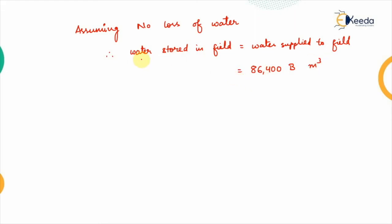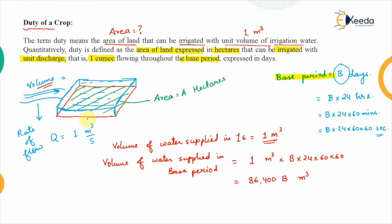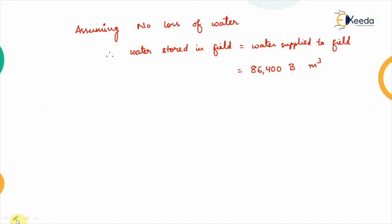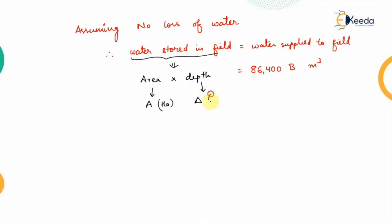The water which can be stored in the field equals the volume of this shape. This shape is typically a cuboid having area A hectares, and the depth of the water in the field is known as the delta of the crop, represented by Δ in meters. So the volume stored in the field equals area × depth — that is A hectares × Δ meters.